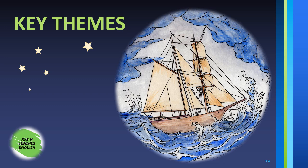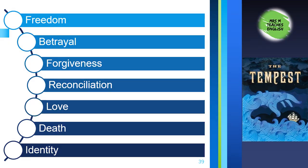As your final assessment is the writing of a literary essay on this play, it's vital that you make notes on the various themes found throughout the play. I suggest that you set aside a page per theme in your notebooks and keep adding information to those pages as you progress through the play. As with most plays and novels, you'll find these fairly generic themes in The Tempest: Freedom, Betrayal, Forgiveness, Reconciliation, Love, Death, and Identity. These are found in almost all the works that we study.